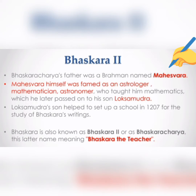Bhaskara Acharya's father was a Brahmin named Maheshwara, who was himself famed as an astrologer, mathematician, and astronomer who taught mathematics, a tradition he passed on to his son. Loksha Mudra's son helped set up a school in 1207 for the study of Bhaskara's writings. Bhaskara is also known as Bhaskara Second or Bhaskara Acharya, the latter name meaning 'Bhaskara the Teacher.'